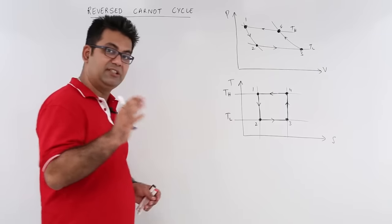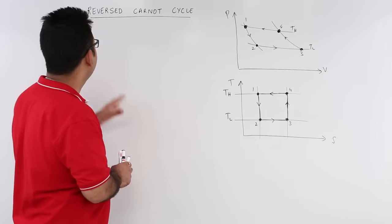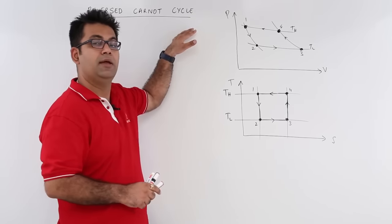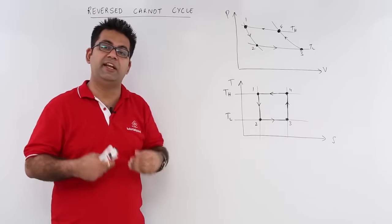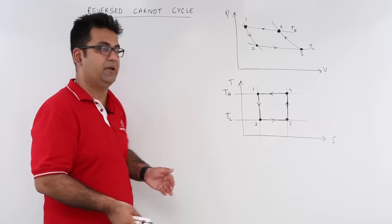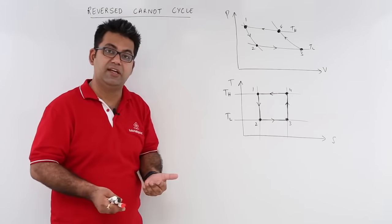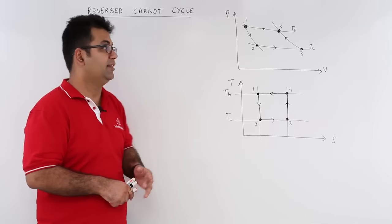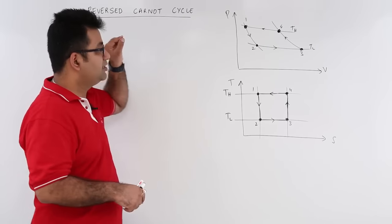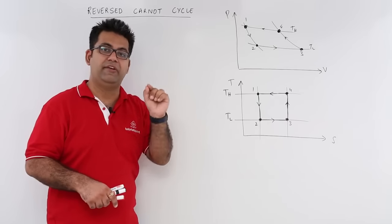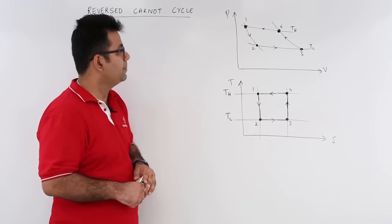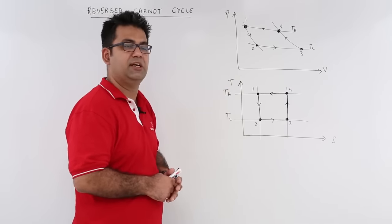Now let's talk about the first refrigeration cycle, the reversed Carnot cycle. The Carnot cycle was a heat engine cycle; if you reverse it, it becomes a reverse Carnot cycle because the Carnot cycle itself is reversible. The reverse Carnot cycle is used for refrigeration cycles. There are four processes: two isentropic and two isothermal.